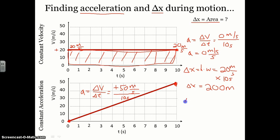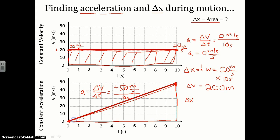Now if we want to find the displacement in those 10 seconds while the object is accelerating — how far it travels — we use the same idea: displacement equals the area between the line and the zero axis. The area is no longer rectangular; it is triangular. So to find the displacement, we need to find the area of this triangle.